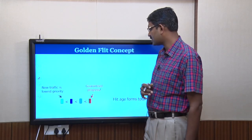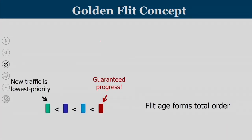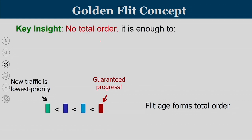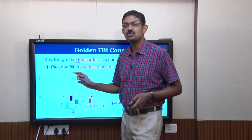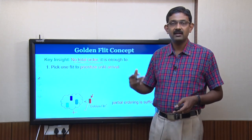A published work introduces the golden flit concept. In the conventional approach, newer traffic gets lower priority and older flits get the highest priority, forming a total order. But do we really need a total order? No — it is enough to pick one flit, call it golden, guarantee its progress, and treat all others as the rest. It is golden versus rest. We do not sort all flits; we pick one flit as golden and all others are non-golden. This is not as complex as a three-stage sorting network.